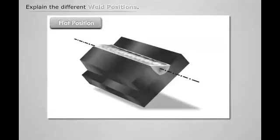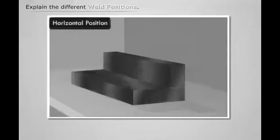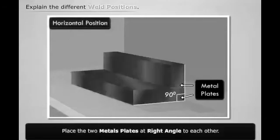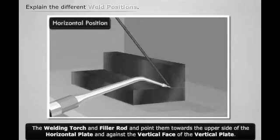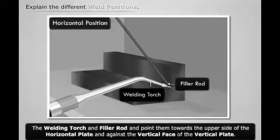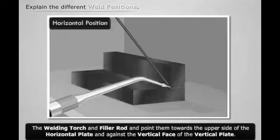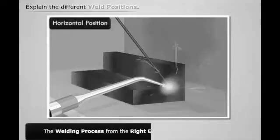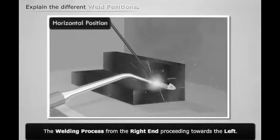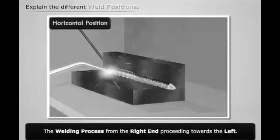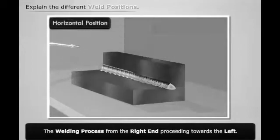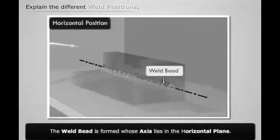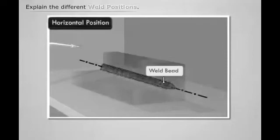Thus we have a weld bead whose alignment is flat. Now let us discuss how to produce a weld whose alignment is horizontal. First, place the two metal plates at right angle to each other. Then bring the welding torch and filler rod and point them towards the upper side of the horizontal plate and against the vertical face of the vertical plate. Now start the welding process from the right end proceeding towards the left. We see that the weld bead is formed whose axis lies in the horizontal plane.